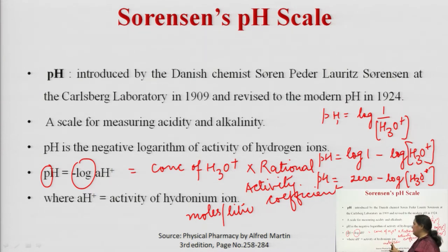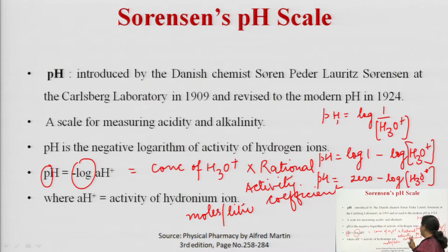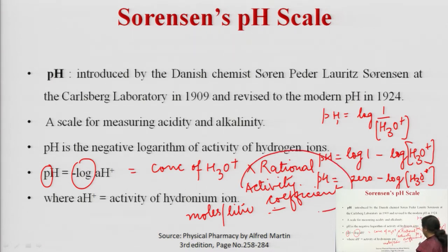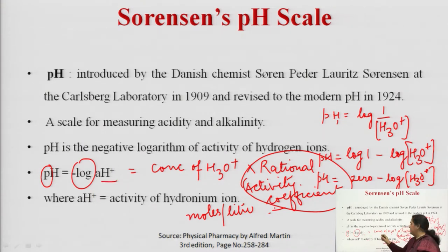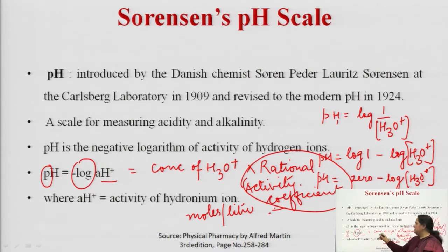The concentration is given in moles per liter, i.e., the molarity of the solution. The activity of hydronium ion equals the concentration of hydronium ion multiplied by the rational activity coefficient. This applies to concentrated solutions. In the case of dilute solutions, the rational activity coefficient term is ignored, so the activity of hydronium ion is taken to be simply the concentration of hydronium ion.